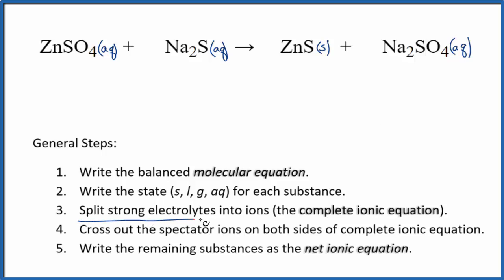Now we can split the strong electrolytes into their ions, and that's going to give us the complete ionic equation. Zinc is always going to be 2+, and the sulfate ion, the whole thing, 2-. So we'll have the zinc ion, Zn2+, and then we'll have the sulfate ion. I'll write the states later.